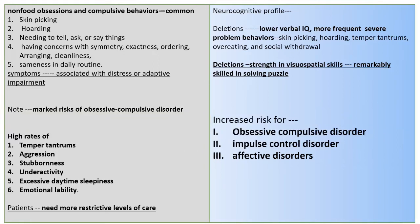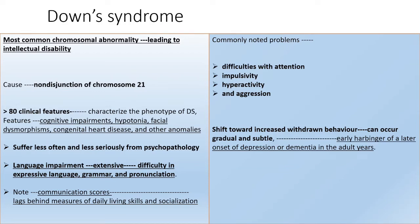Down syndrome is the most common chromosomal abnormality leading to intellectual disability, caused by non-disjunction of chromosome 21. Greater than 80 clinical features characterize the condition, including cognitive impairment, hypotonia, facial dysmorphism, congenital heart disease, and other anomalies. Language impairment is extensive, with difficulty in expressive language, grammar, and pronunciation. Communication scores lag behind measures of daily living and socialization. Commonly noted problems include impulsivity, hyperactivity, aggression, and attention difficulties. A gradual, subtle shift towards increased withdrawn behavior is a marker for early onset of depression or dementia in adult years.